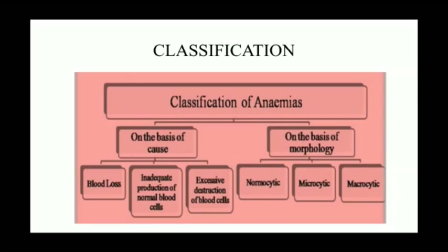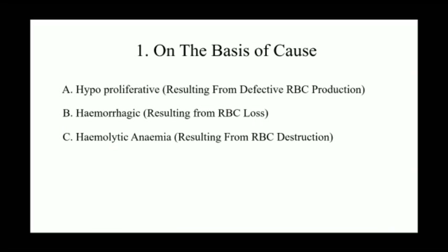Anemia do basis par divide hota hai. On the basis of causes: blood loss, inadequate production of normal cells, aur excessive destruction of blood cells. On the basis of morphology: normocytic, microcytic aur macrocytic. Causes ke basis par: hypoproliferative — RBC production defective hota hai; hemorrhagic — RBC loss hoti hai; hemolytic anemia — RBC destruction hota hai.